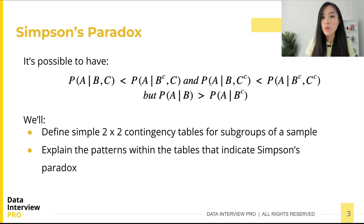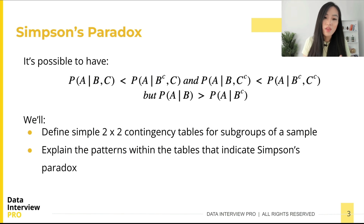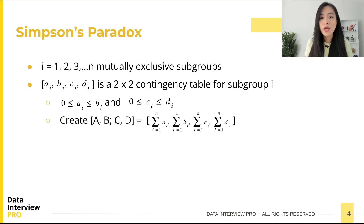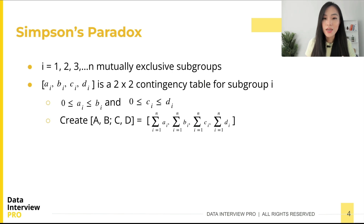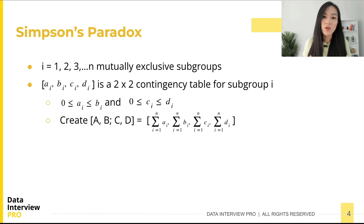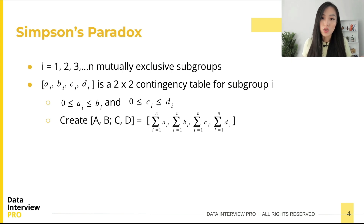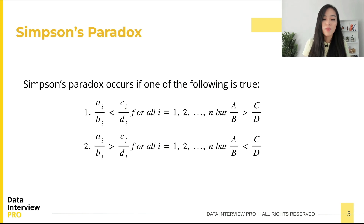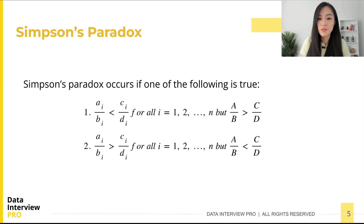Instead I want to give you a more practical form of the definition. First we will define simple two-by-two contingency tables for subgroups of a sample, and then explain the patterns within the tables that indicate Simpson's Paradox. Suppose we have i equals one, two, three... n mutually exclusive subgroups, and ai, bi, ci, and di is a two-by-two contingency table for subgroup i. We can add the tables together to create capital A, B, C, D as the sum of ai, bi, ci, and di respectively. Simpson's Paradox occurs when we compare the sum of the numerators with the sum of the denominators and the sign of the inequality observed within the subgroups is reversed.